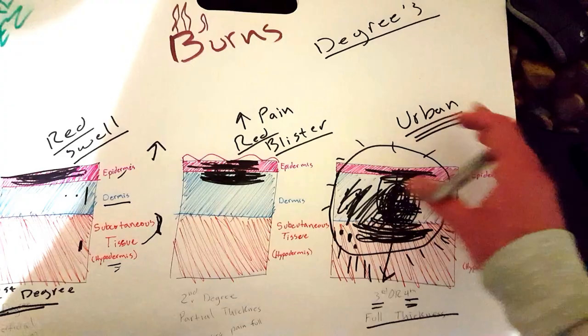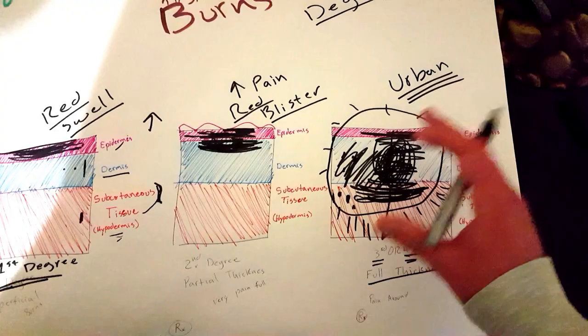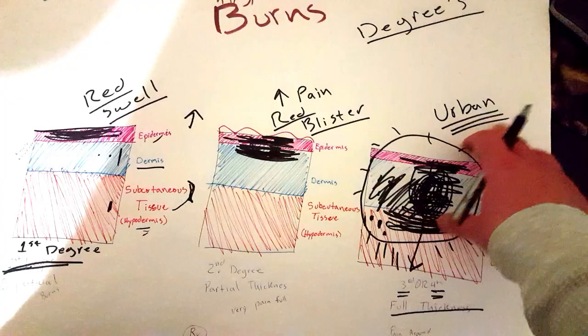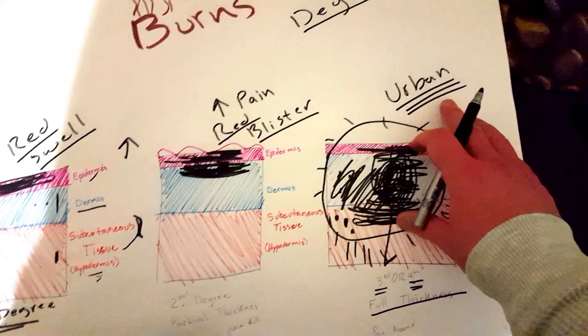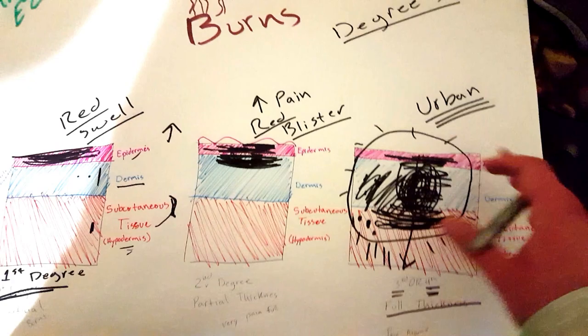When you take them to the hospital, the first thing they're going to do is take all that off to visualize the burn and see how bad the damage is. So by you putting on the ointment in an urban setting, you're actually making it worse and delaying care. Urban means like city or bigger town. If you're out in the mountains hiking, that's a whole different situation with different protocols, but it depends on where you're at.